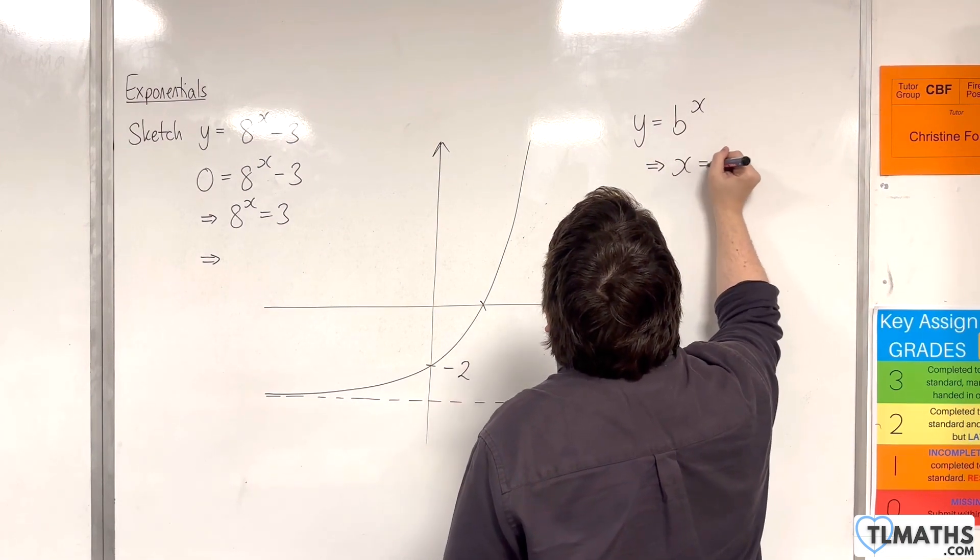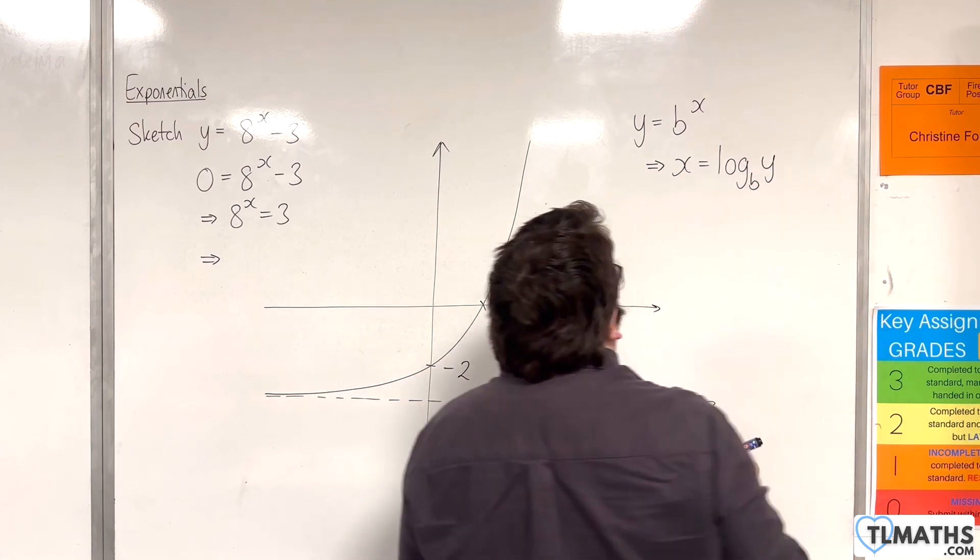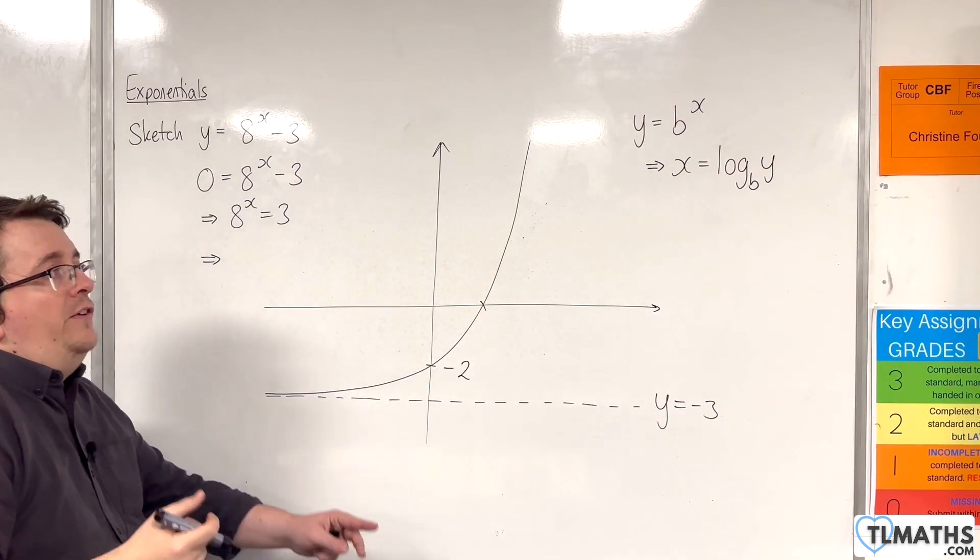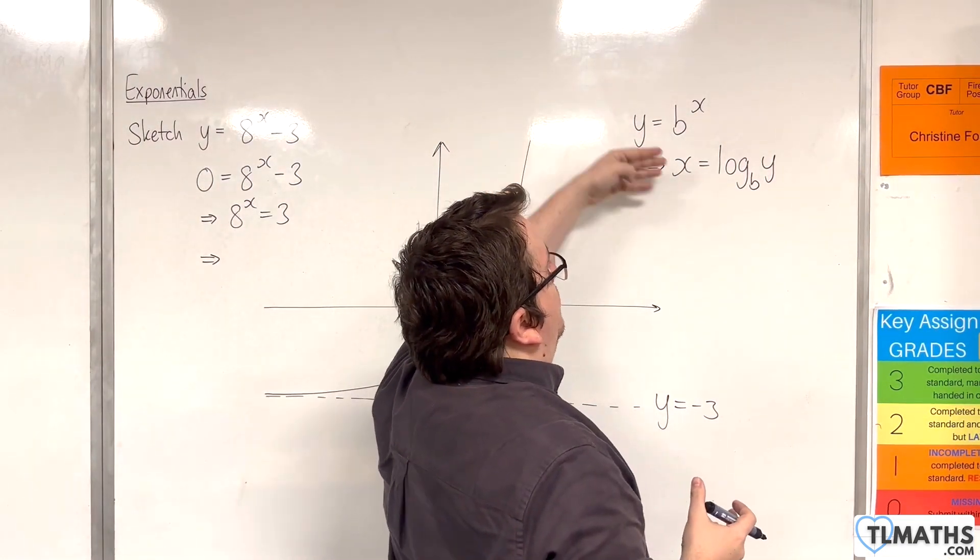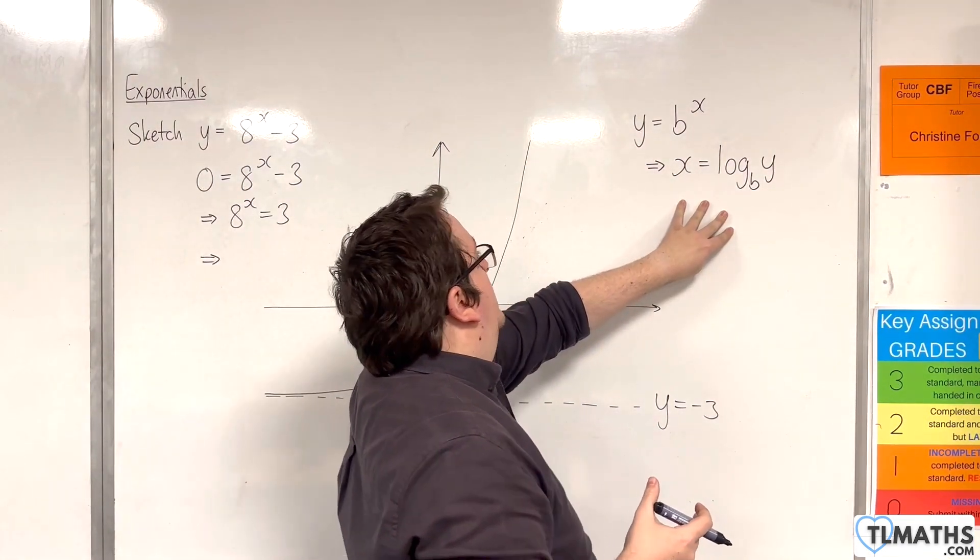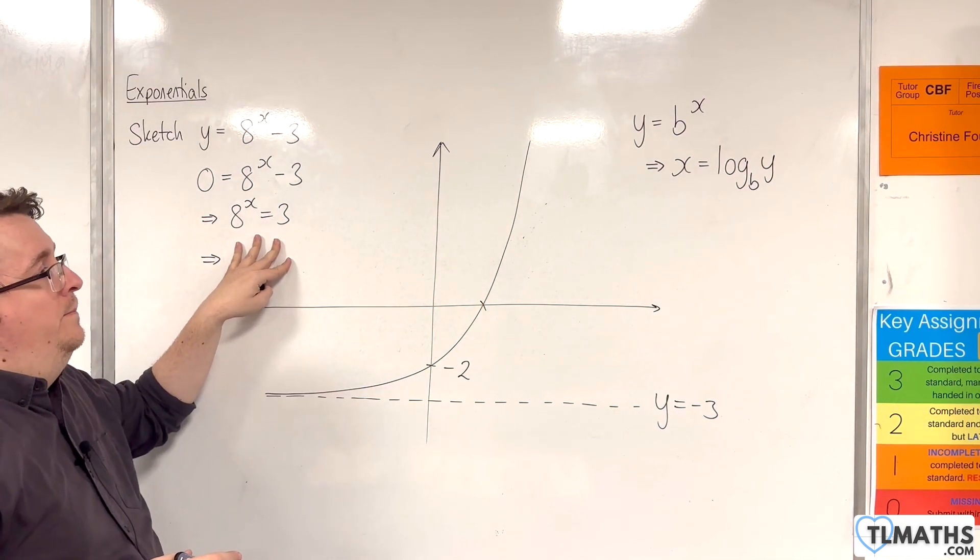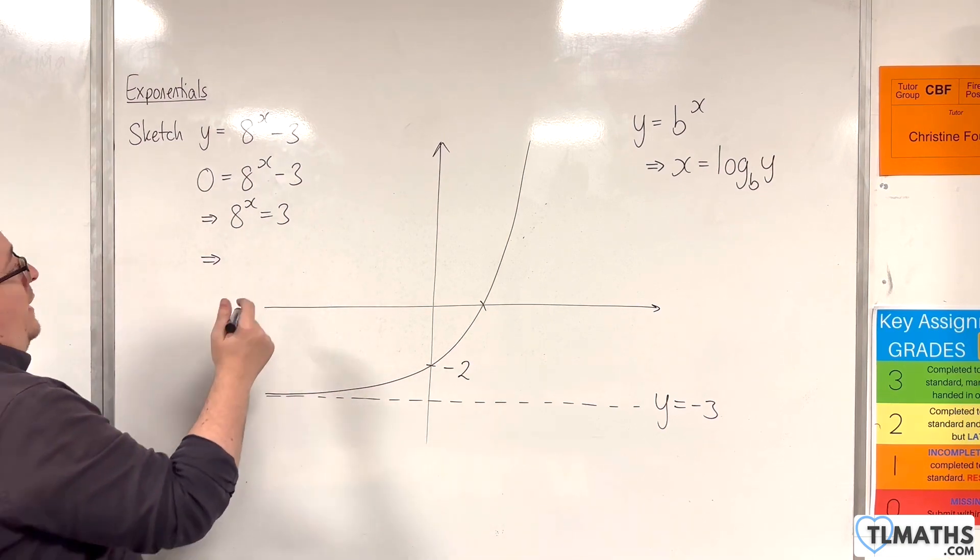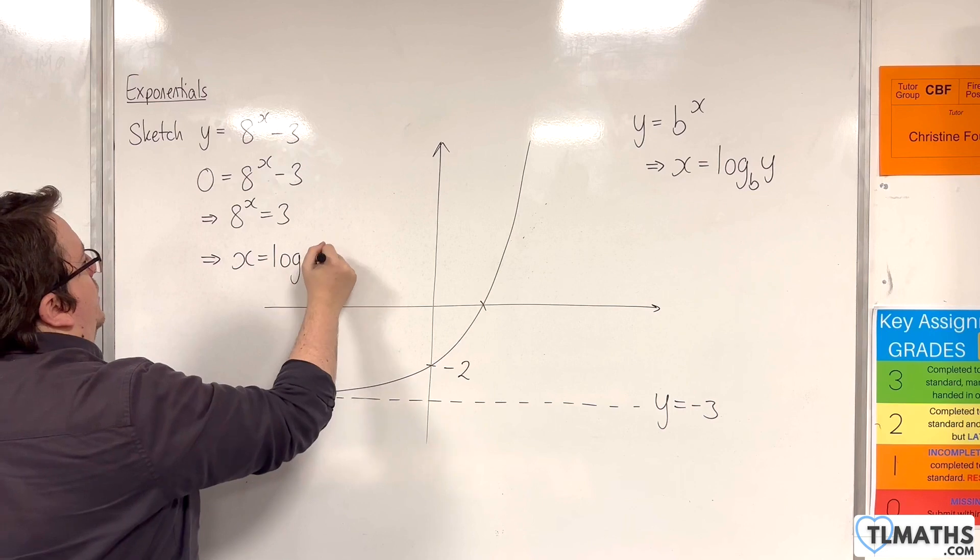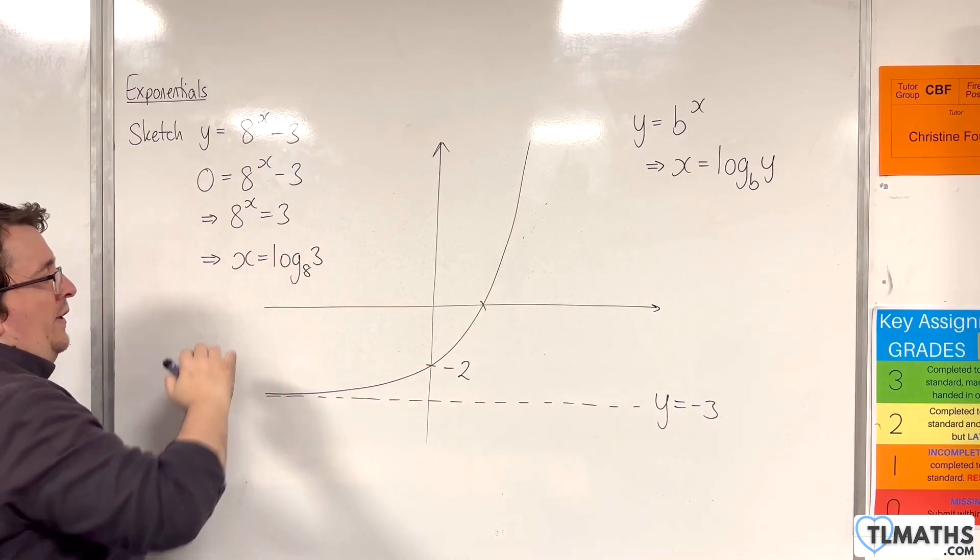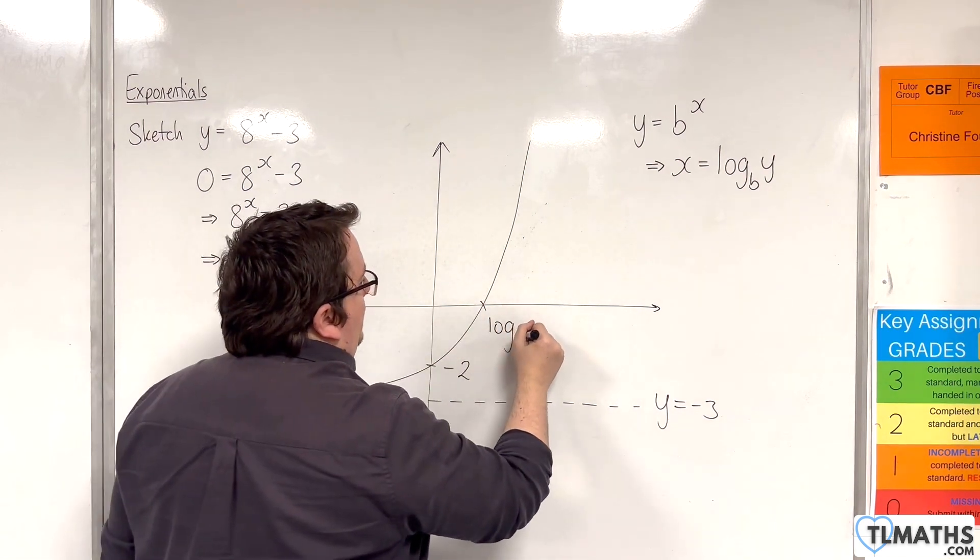Okay, so this is what we refer to as a conversion going from exponential form to logarithmic form. And this is how you can solve equations like 8^x = 3. So in this case, x will be log base 8 of 3. And this is the exact point where the curve goes through the x-axis.